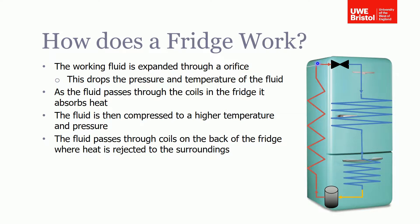As it passes through these coils it cools, reaching a point where it's still at quite a high temperature and pressure, then it's expanded again. Because it's lost that heat through the coils, as it expands it gets to a much lower temperature, and then the cycle repeats. Essentially, it's moving heat from the fridge to outside and dumping it into the surroundings — your kitchen.